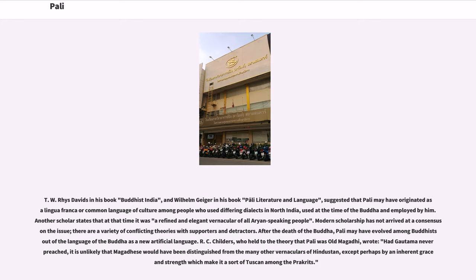Modern scholarship has not arrived at a consensus on this issue; there are a variety of conflicting theories with supporters and detractors. After the death of the Buddha, Pali may have evolved among Buddhists out of the language of the Buddha as a new artificial language. R.C. Childers, who held to the theory that Pali was old Magadhi, wrote: 'Had Gotama never preached, it is unlikely that Magadhi would have been distinguished from the many other vernaculars of Hindustan, except perhaps by an inherent grace and strength which make it a sort of Tuscan among the Prakrits.'